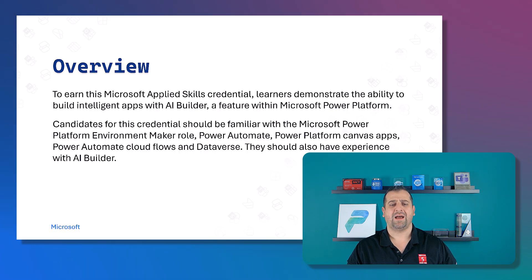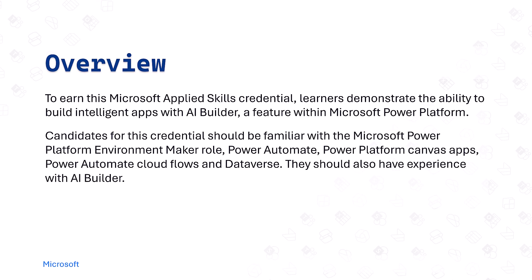Now let's get back to our Applied Skill and do a quick overview. To earn this Microsoft Applied Skills credential, learners demonstrate the ability to build intelligent apps with AI Builder, a feature in the Microsoft Power Platform. Candidates should be familiar with the Microsoft Power Platform Environment Maker role, Power Automate, Power Platform Canvas Apps, Power Automate Cloud Flows, and Dataverse. They should also have experience with the AI Builder — which, funny enough, Microsoft listed last, even though the AI Builder is the only product inside the name of the Applied Skill.